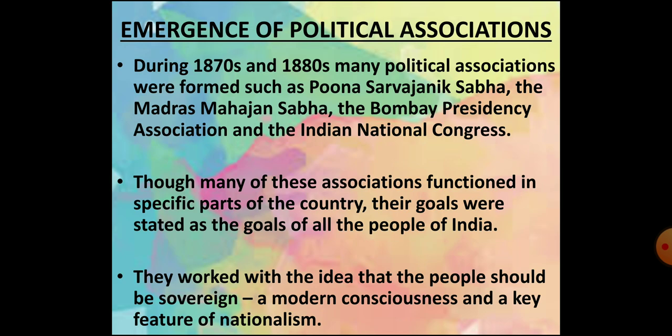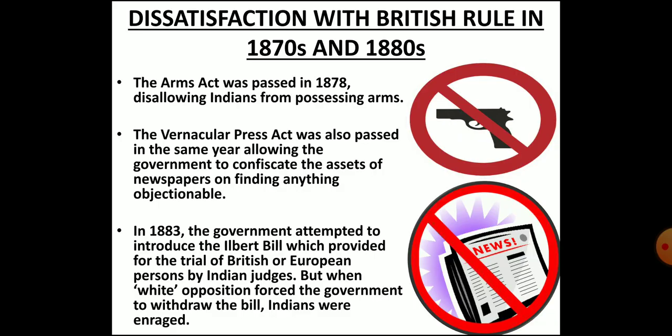Some of such political associations were the Puna Sarvjanik Sabha, the Indian Association, the Madras Mahajan Sabha, the Bombay Presidency Association, and the Indian National Congress. Most of these associations worked in different small parts of the country, but their goals were expressed as the goals of all people of India and not the people of any one region or community. These associations followed the idea of sovereignty — they believed that Indians should have the power to take decisions on matters that affect them.